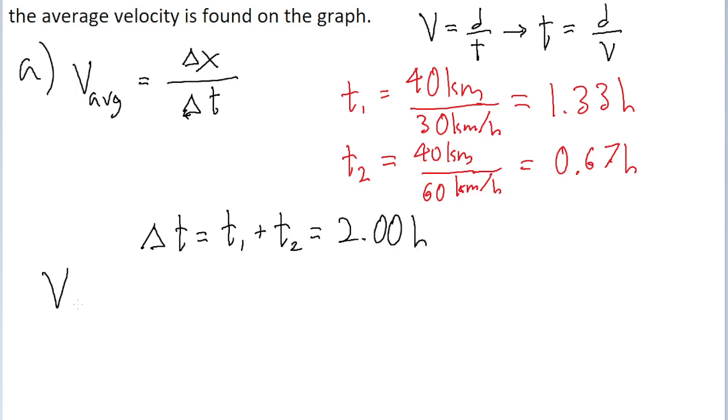For the average velocity, we take our total displacement, 80 kilometers, and divide by the time of 2 hours. Put that into a calculator, and we find an average velocity of 40 kilometers per hour. And that is the average velocity.